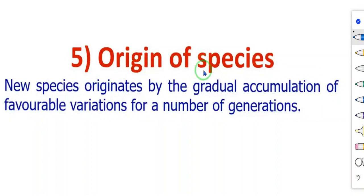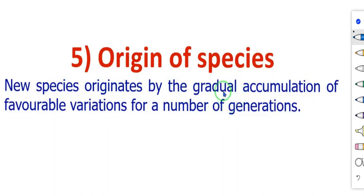The fifth principle is origin of species. New species originate by the gradual — not sudden — accumulation of favorable variations over a number of generations, passing from one generation to the next.